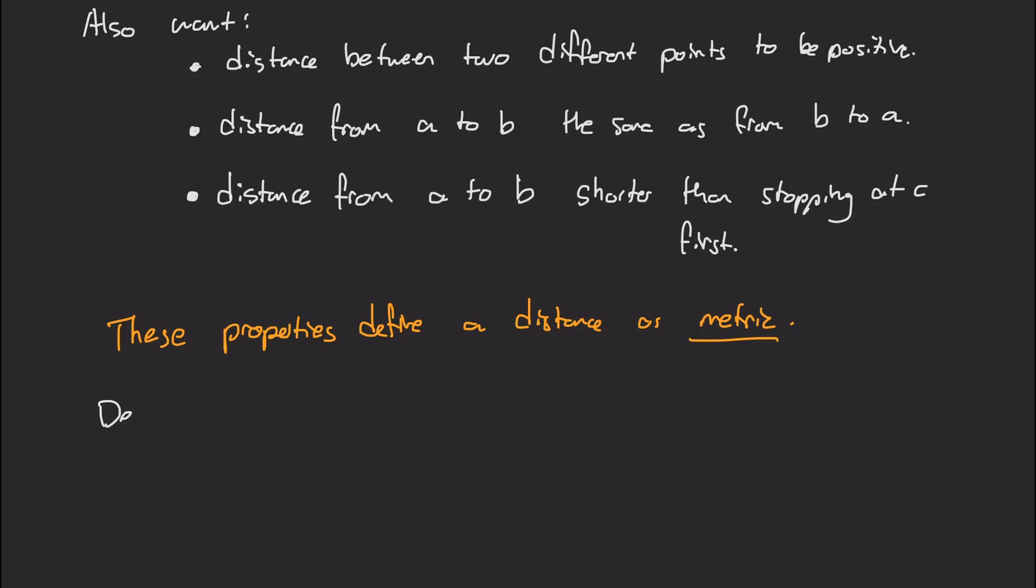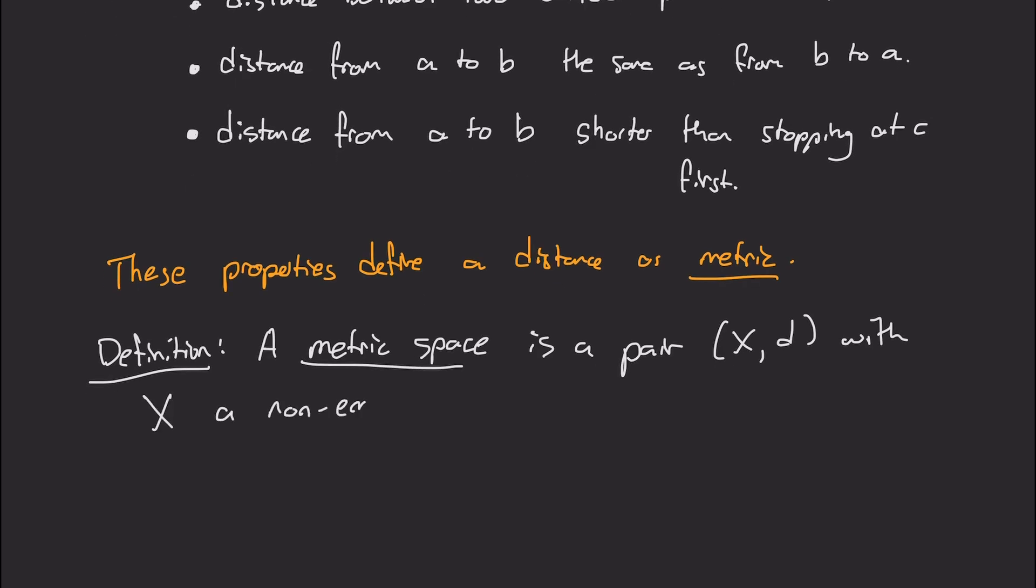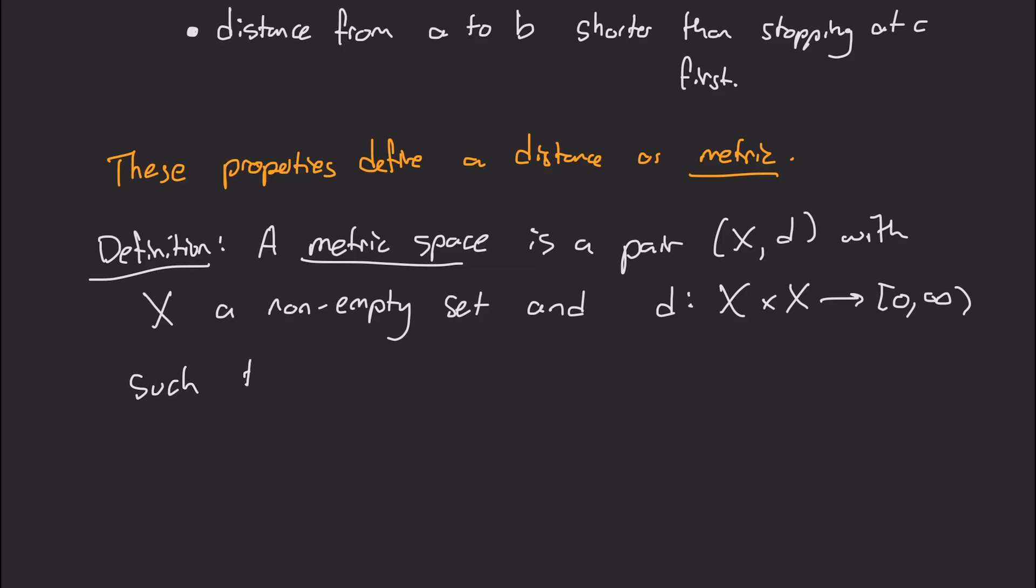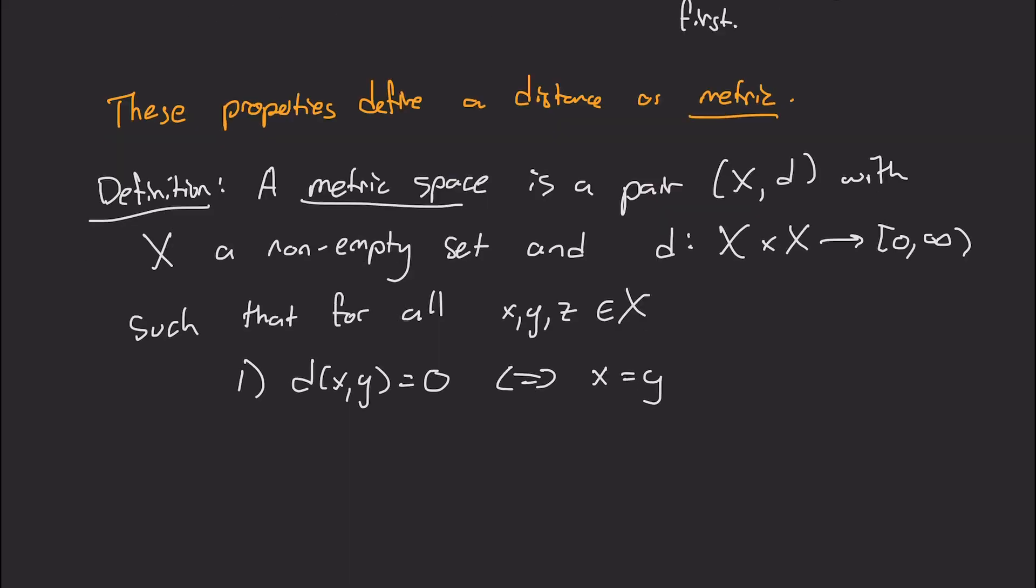Mathematicians like to formalize this, and they give the following definition. A metric space is a pair of x, d, where x is a non-empty set, and d is a function that takes in two points in x and gives a non-negative real number, such that for all x, y, and z, so for any three points, we have that the distance between x and y is zero if and only if x equals y. So that's our first observation. That's the first property that we wanted.